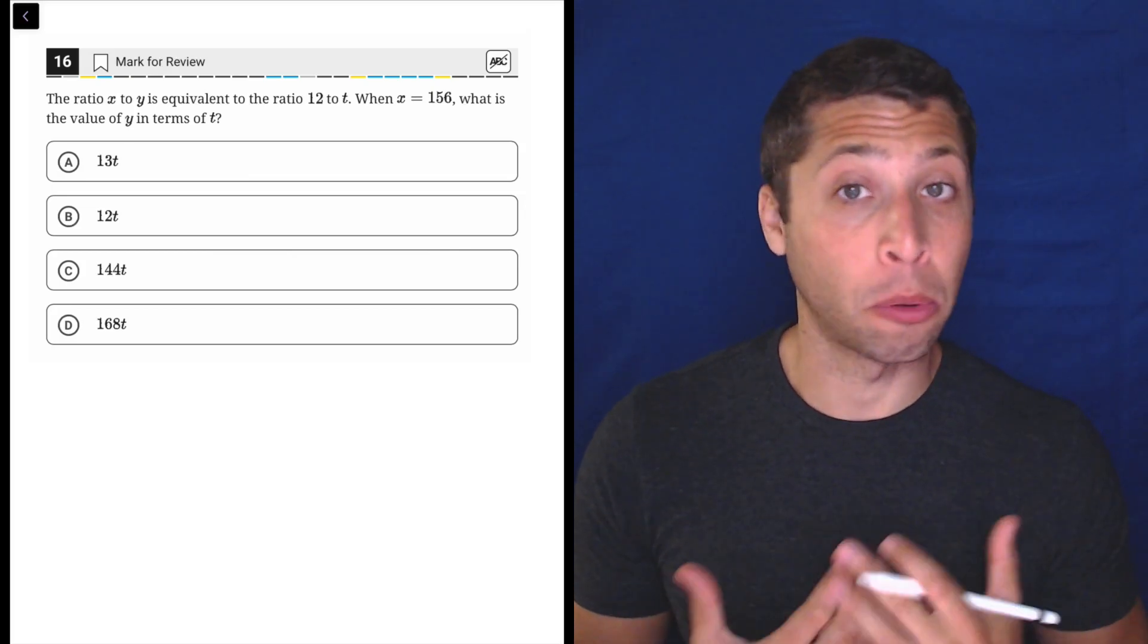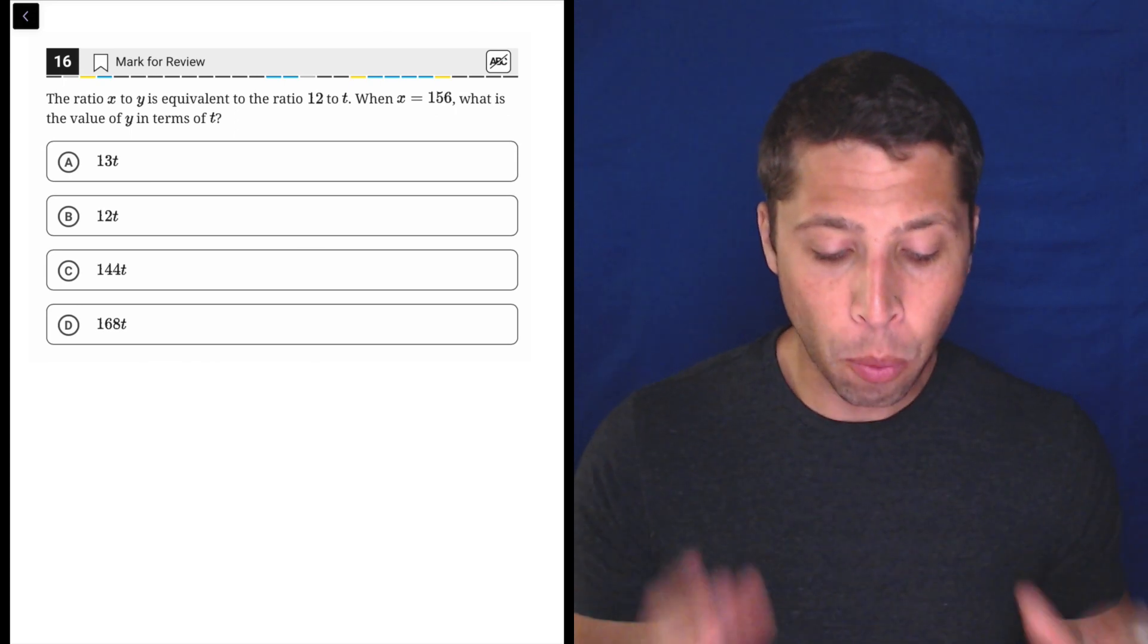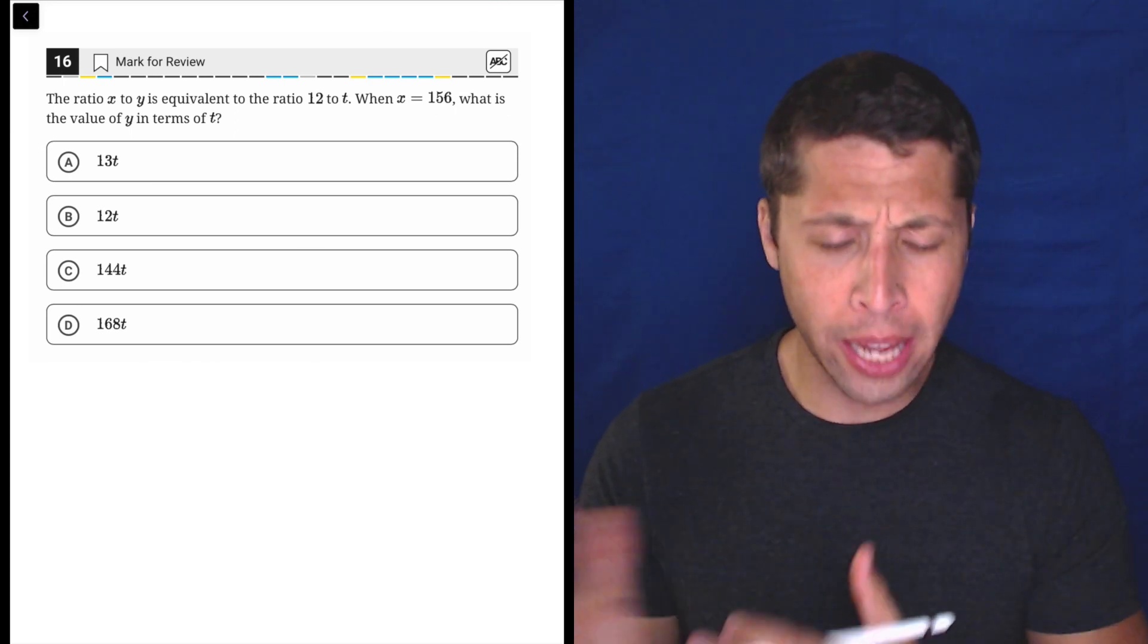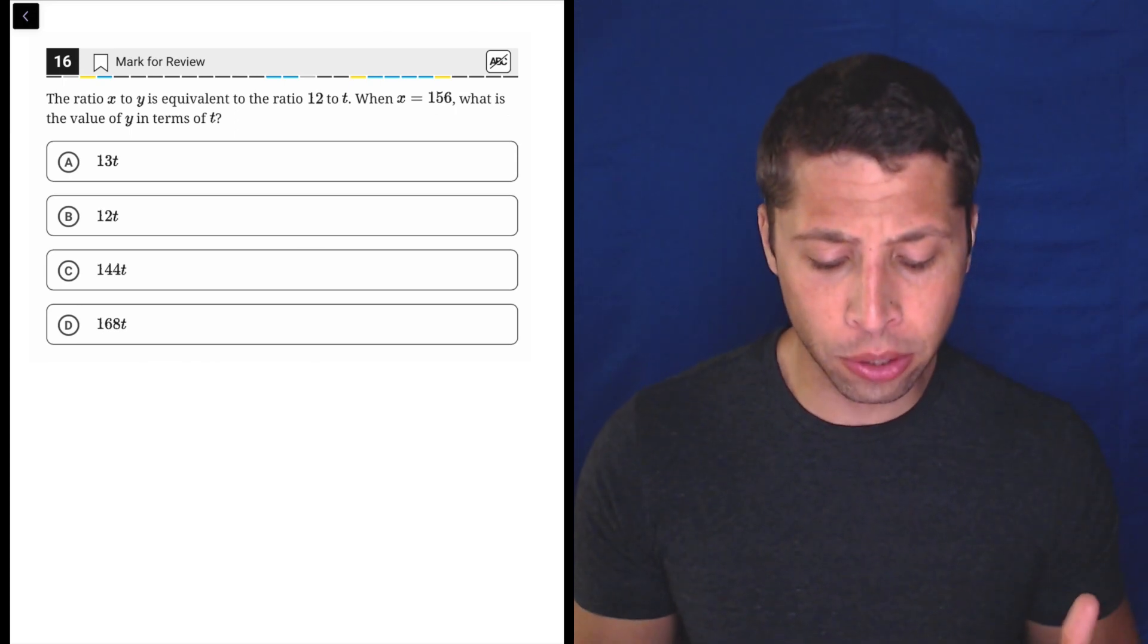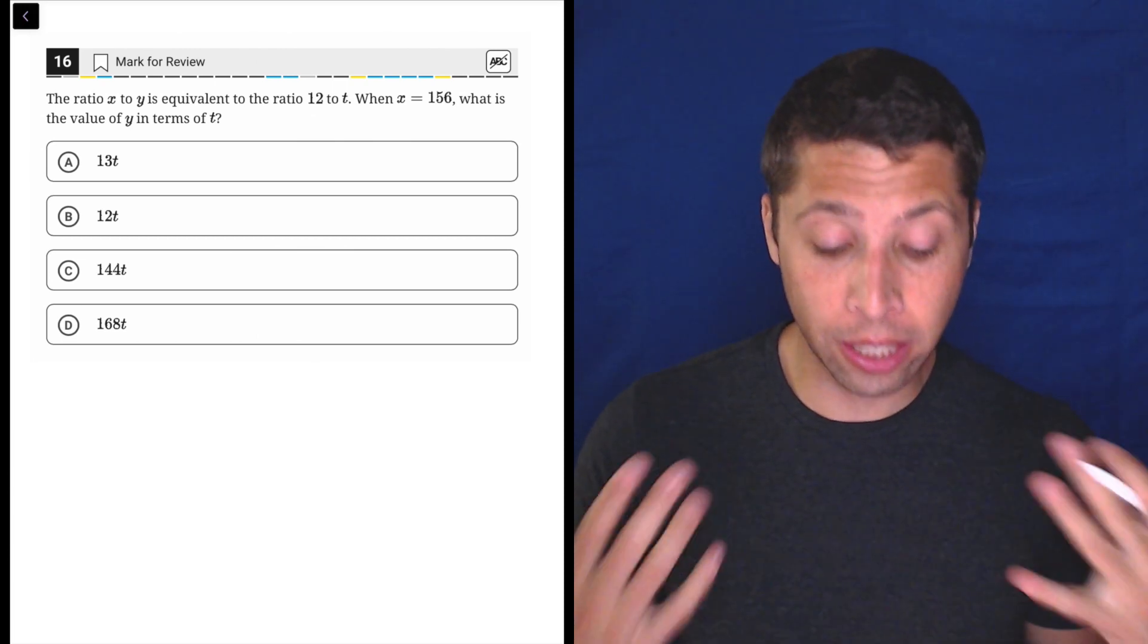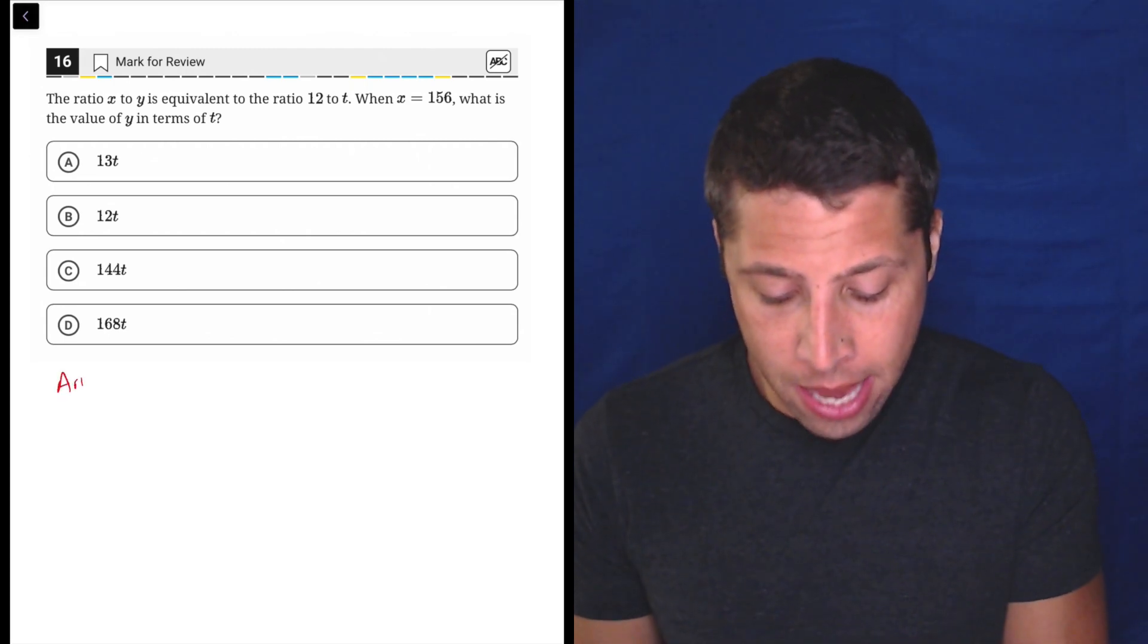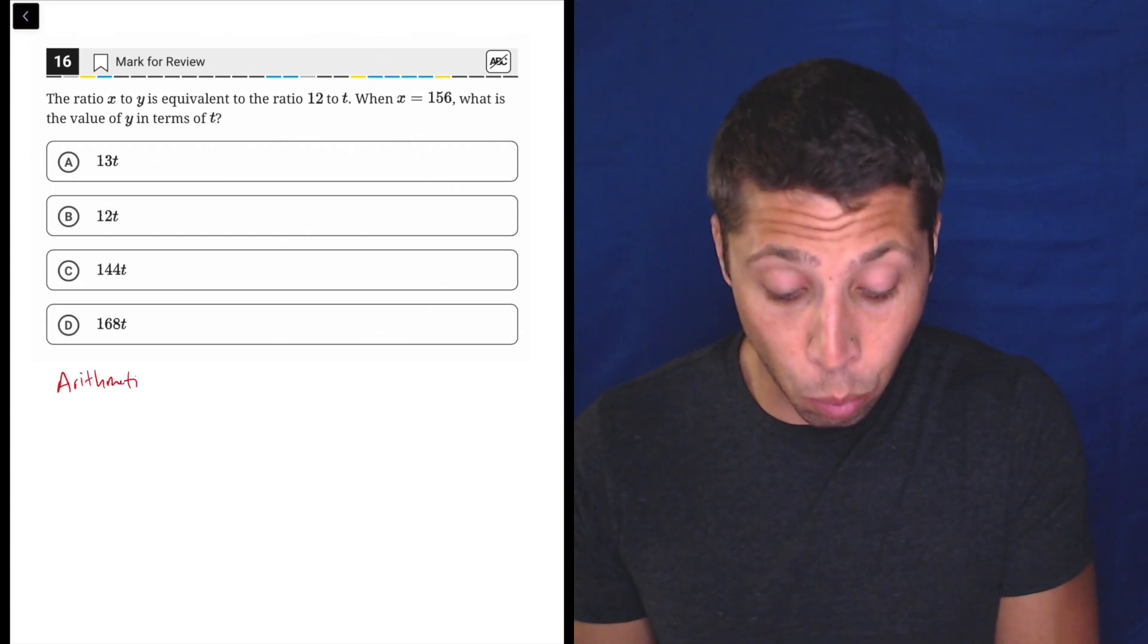This question is asking us to set up a ratio, which means we're going to use some fractions to set this up. But one thing that is a little weird is we have x and y and t, so there's not really a whole lot of numbers, and then the choices all have t in them, that can throw you off. So here's a good example of a question that is very easy to arithmetize and make the variable go away, or at least one of them.